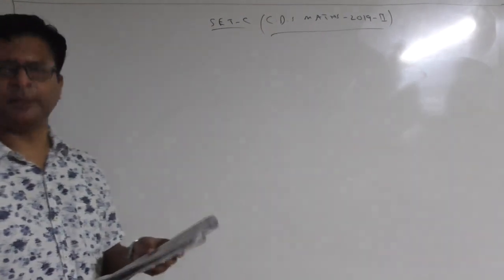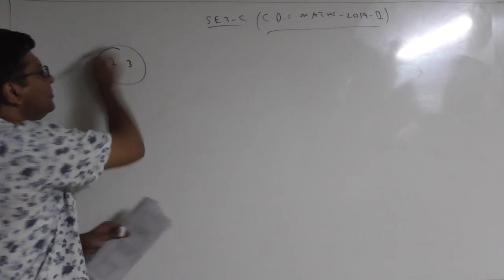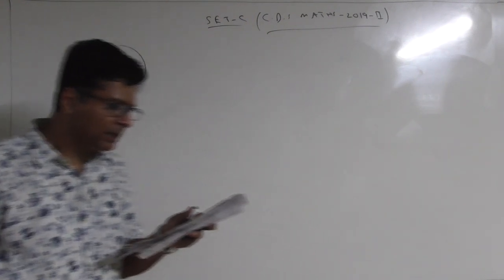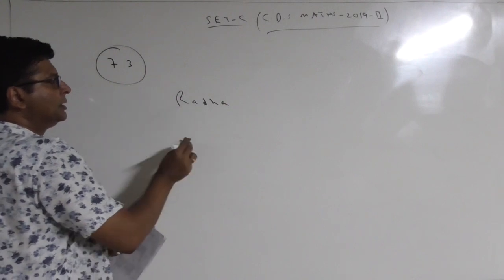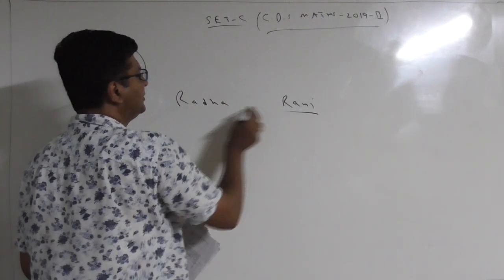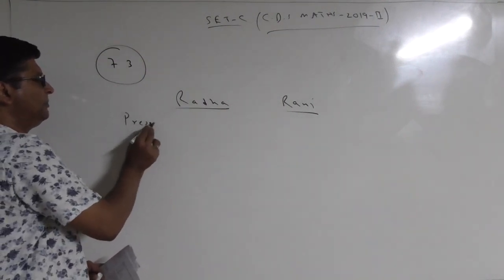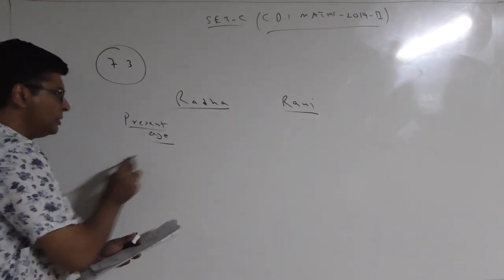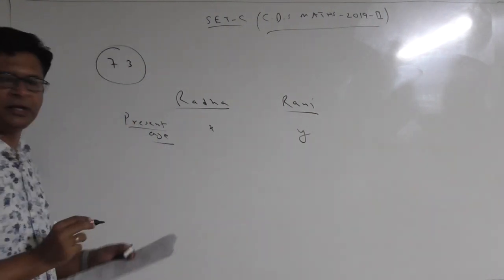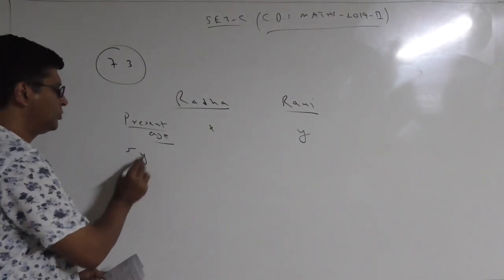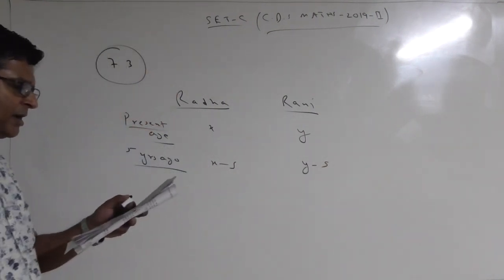Coming to the next question where some students have faced problems — that is question number 73. The question says Radha and Rani are sisters. This is a question of age. Let present age of Radha be X and Rani be Y. Five years back, their ages were X-5 and Y-5. The question says 5 years back, Radha's age was 3 times Rani's age. And 1 year back, their ages are X-1 and Y-1.